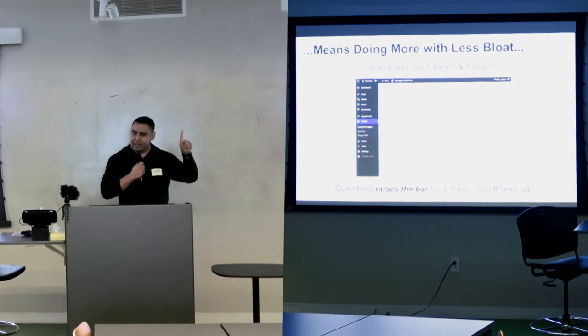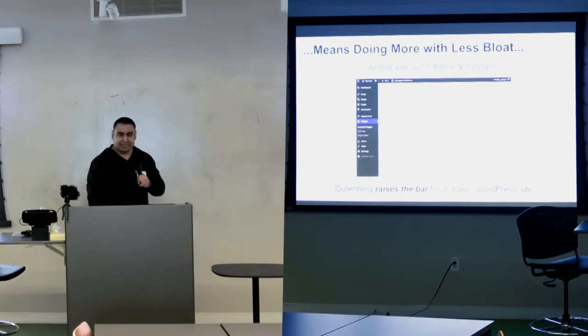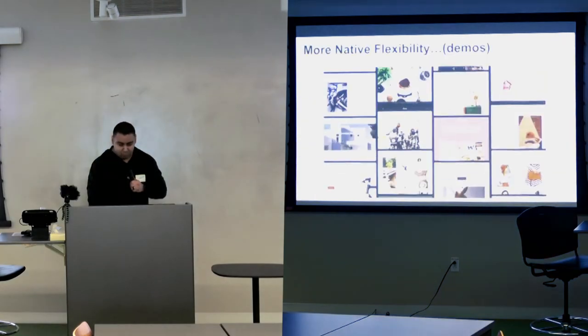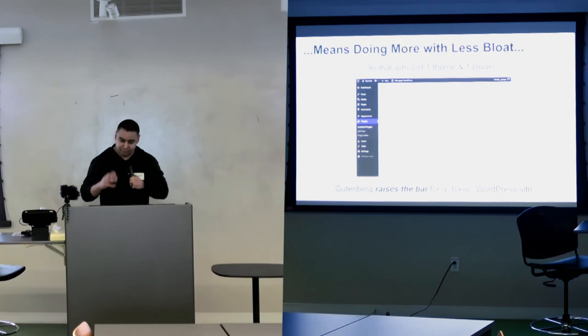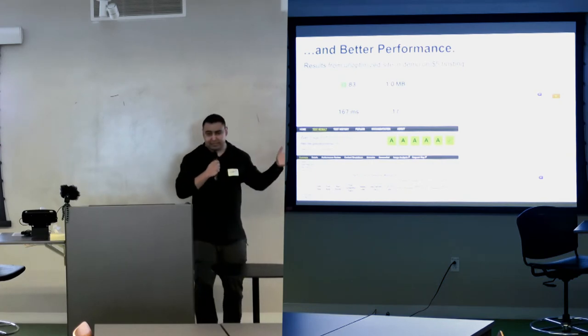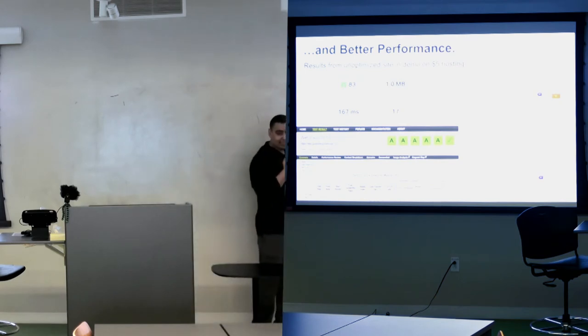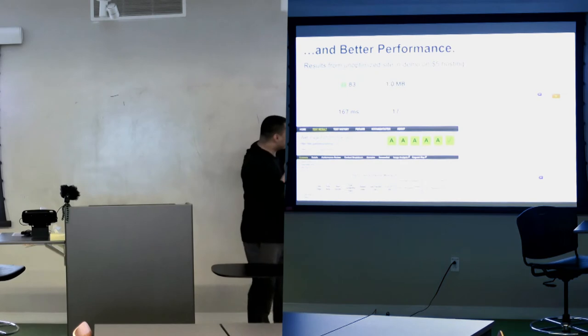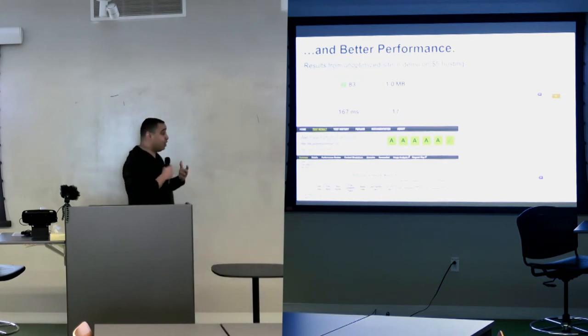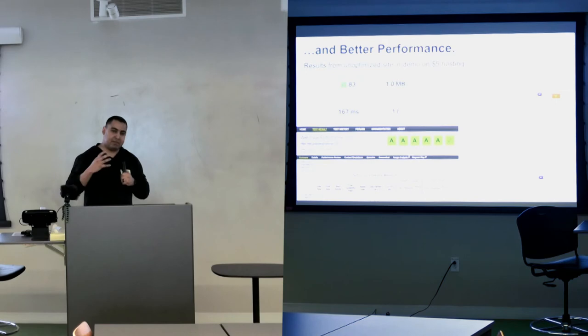So I pulled one of those sites and tested it. This is totally unoptimized, right? On $5 hosting. Loaded in 165 milliseconds. Web page size, right across the board. Google page sites, 100 on desktop, 98 on mobile. Like for WordPress, that's insane. I hope you guys are excited about this. This is crazy for WordPress. Because WordPress sites are usually bloated, right? They take a long time to load. But this is where we're going with Gutenberg. Because they're not loading a lot of overhead. This is all in WordPress core. Just some extra JavaScript and some styles, right? Any questions on any of this?